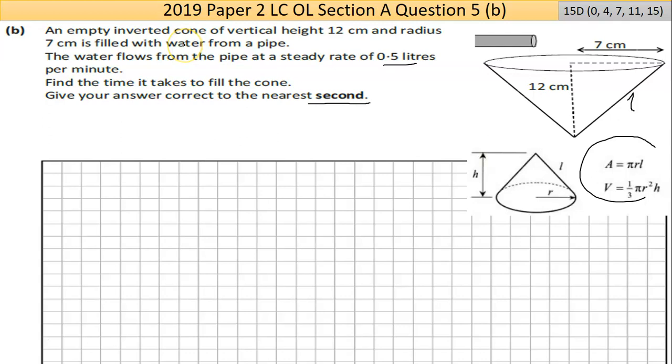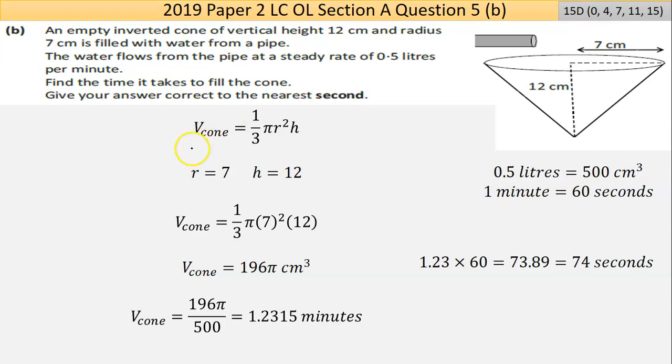The volume looks like this formula here: the formula for volume of a cone. I'm given the radius and the height, so I have two of the three things needed for the right-hand side. I know π as well, so I actually have all the things I need. I put all the numbers into the formula, put it to the calculator: 196π cm³. That's the volume of the cone.